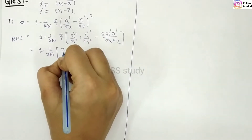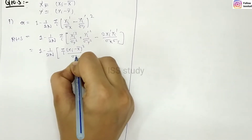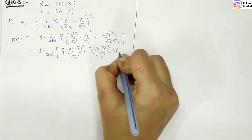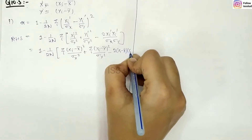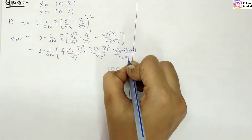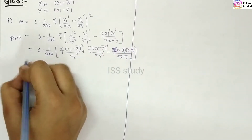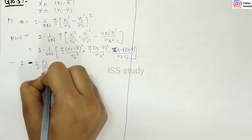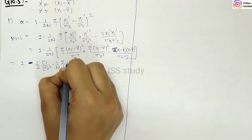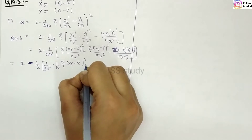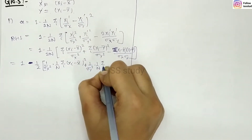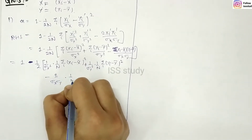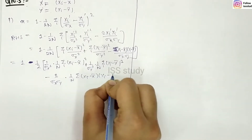Expanding this, we get x_i minus x-bar, then y_i minus y-bar, upon σ_x·σ_y, with summation. Now, sending n inside: 1 upon σ_x times (1/n · summation of (x_i minus x-bar) whole square), then next term is 2 upon σ_x·σ_y times (1/n · summation of (x_i minus x-bar)(y_i minus y-bar)).